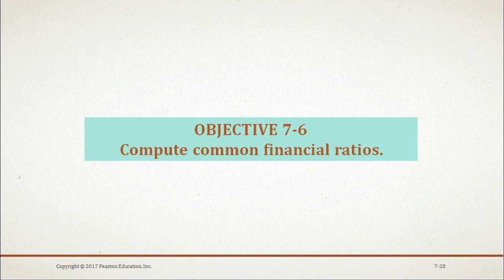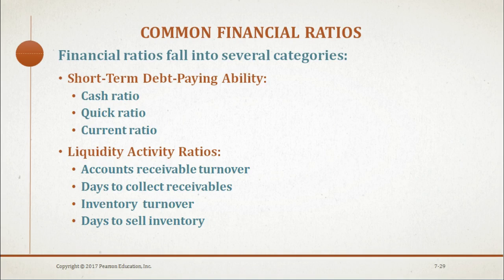Auditors' analytical procedures often include the use of general financial ratios during planning and final review of audited financial statements. We will now discuss the common financial ratios used in auditing. Financial ratios are useful for understanding recent events and the financial status of the business and for viewing statements from the perspective of a user. Ratios and other analytical procedures are normally calculated using spreadsheets and other audit software. Auditors normally use the cash ratio, the quick ratio, and the current ratio in determining a client's short-term debt-paying ability.